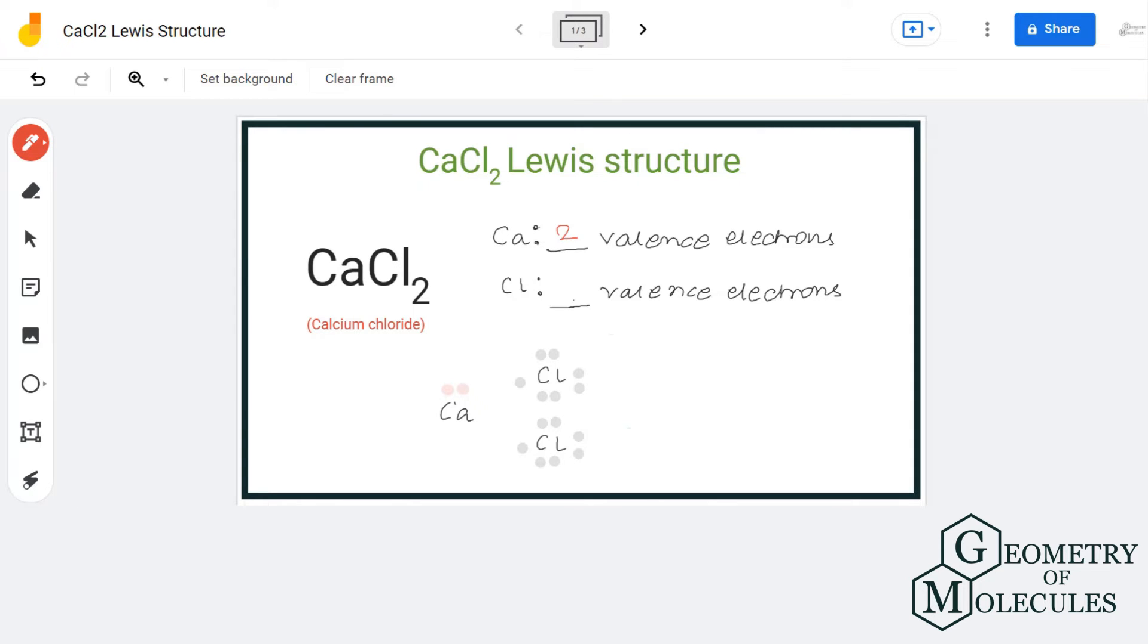Calcium has two valence electrons and chlorine atom has seven valence electrons. Calcium donates one electron each to one chlorine atom. This way, chlorine atoms will have complete octets, and this is the Lewis structure for CaCl2.